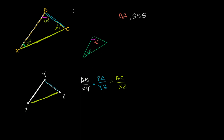You don't want to get this confused with side-side-side congruence. These are our similarity postulates — things we're going to assume and build on to solve problems and prove other things. For congruence, side-side-side means the corresponding sides are actually congruent. For similarity, side-side-side means the ratio between corresponding sides is the same.